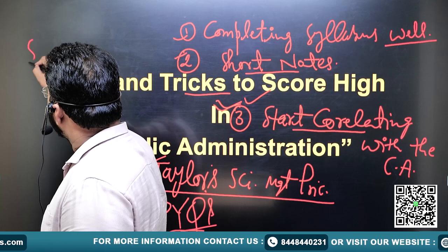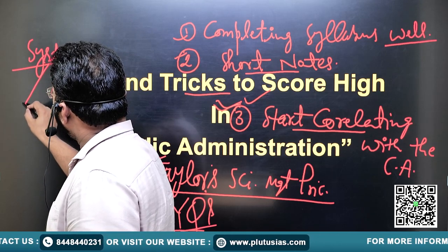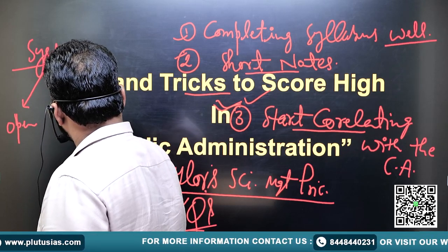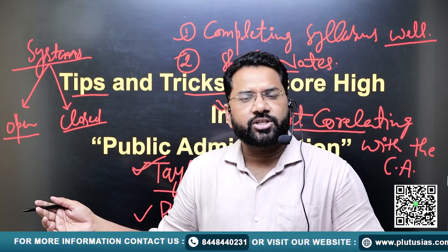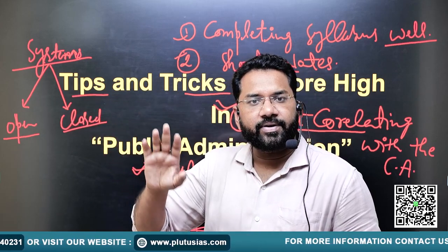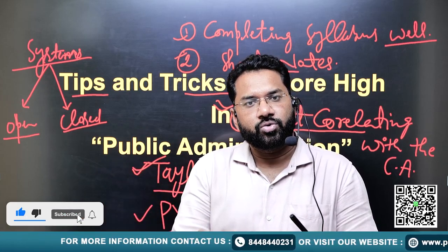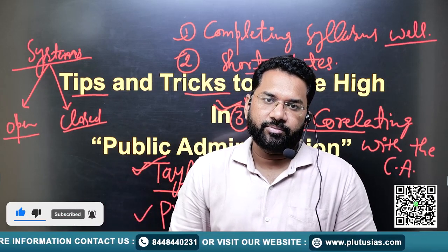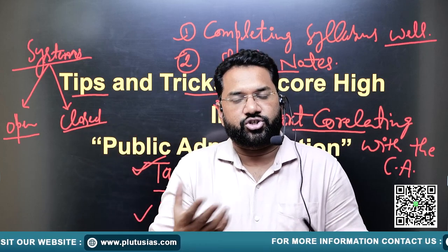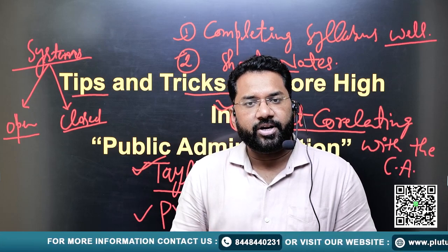For example, we study various systems — open systems and closed systems. If a question asks you to explain various types of systems, you will explain open and closed systems and then relate those systems with contemporary times, giving examples of what open and closed systems exist today, and which system is more suitable in the current period.